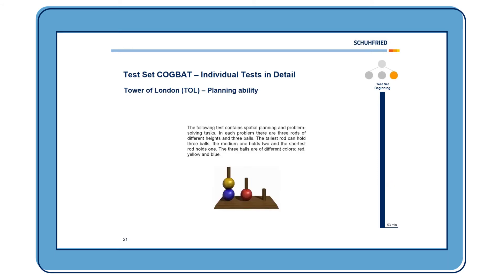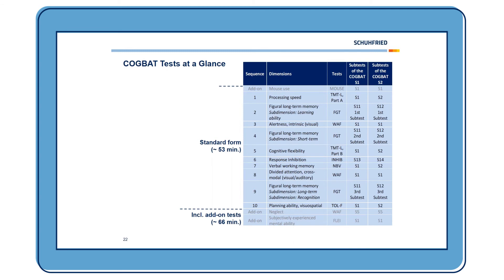Finally, we have the Tower of London, another classic test to measure planning ability. Three differently colored balls and three rods of different heights are shown. A target formation is displayed, and the task is to rebuild this formation as efficiently as possible. There are also two add-on tests — not covered in detail here — which measure neglect and subjectively experienced mental ability, particularly important in psychiatric disorders like schizophrenia.